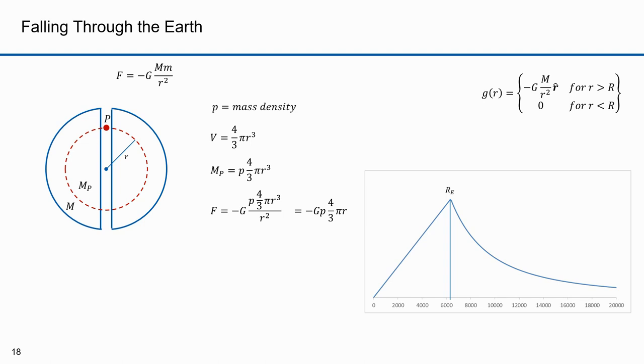So the plot below the radius of the Earth diminishes linearly, while the part above the radius of the Earth diminishes exponentially.